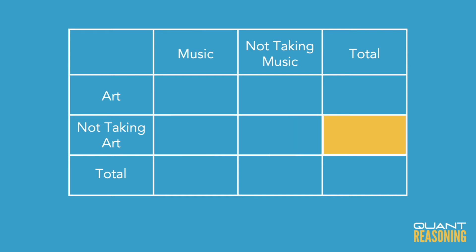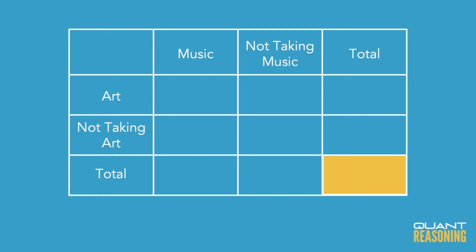You have those who take neither music nor art, and all of the students who don't take art. And then finally in the bottom row you have all of the people who take music, all of the people who don't take music, and then just all of the people — which in our case is 5,000.